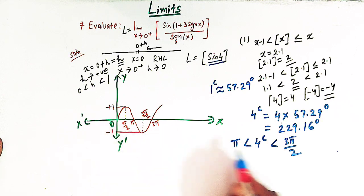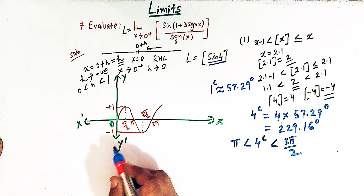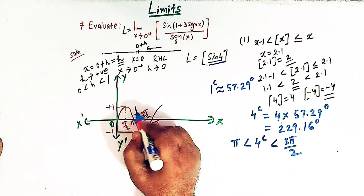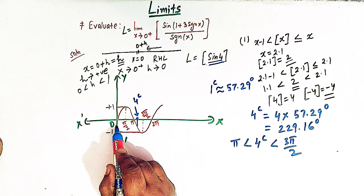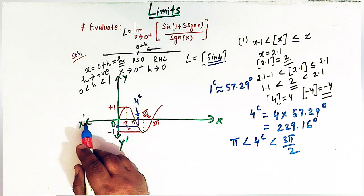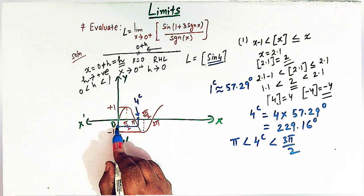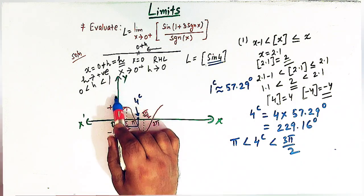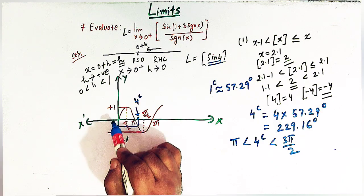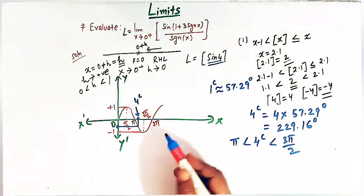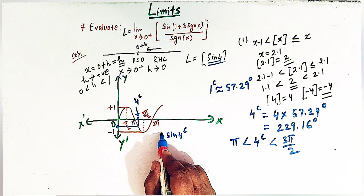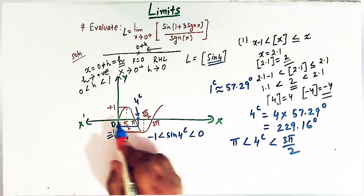Coming back to our graph, 4 radians equals 229.16 degrees, so this angle lies somewhere between π and 3π/2 on the x-axis. The value of sin(4 radians) is given by the corresponding point on the y-axis. We can clearly see that this point lies between the minimum value -1 and 0. So from the graph we conclude that sin(4 radians) is greater than -1 and less than 0.